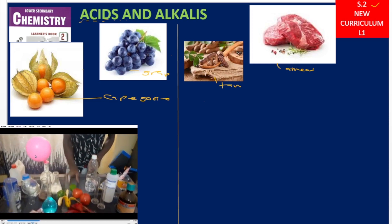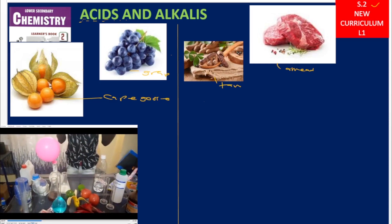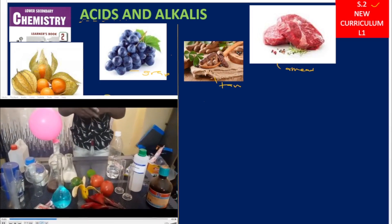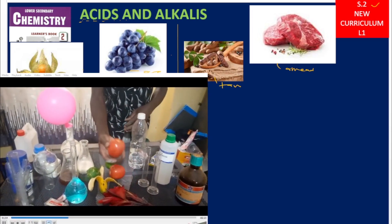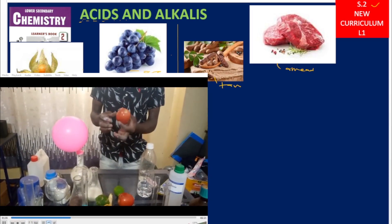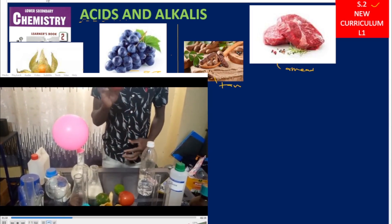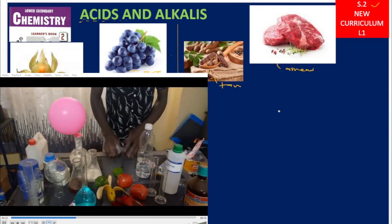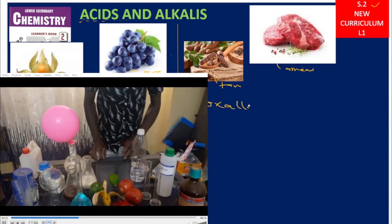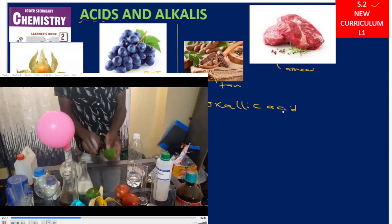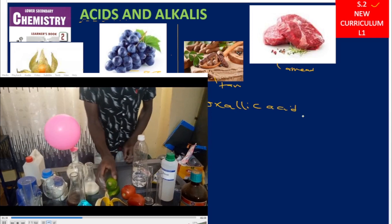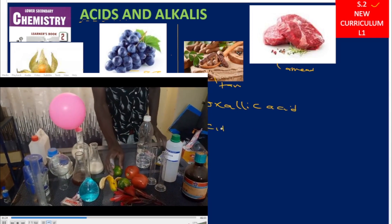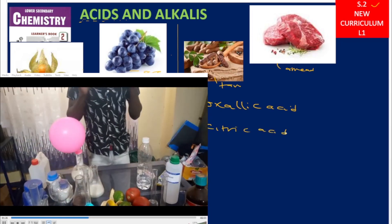Because this is a new curriculum, we are going to visualize activities taking place within our laboratory — the RevisionUG laboratory. That there is a tomato, and that tomato is a fruit that also contains acids. The acids within tomatoes are called oxalic acid. And over there are lemons, which also contain acids — those acids we call citric acid.